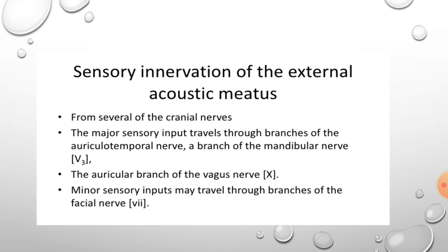The sensory innervation of the external acoustic meatus is from several cranial nerves. The major sensory input travels through branches of the auriculotemporal nerve, a branch of the mandibular nerve from the trigeminal nerve. There is also the auricular branch of the vagus nerve, and minor sensory inputs from the facial nerve. You need to remember these three nerves — trigeminal, vagus, and facial — when talking about the external acoustic meatus.